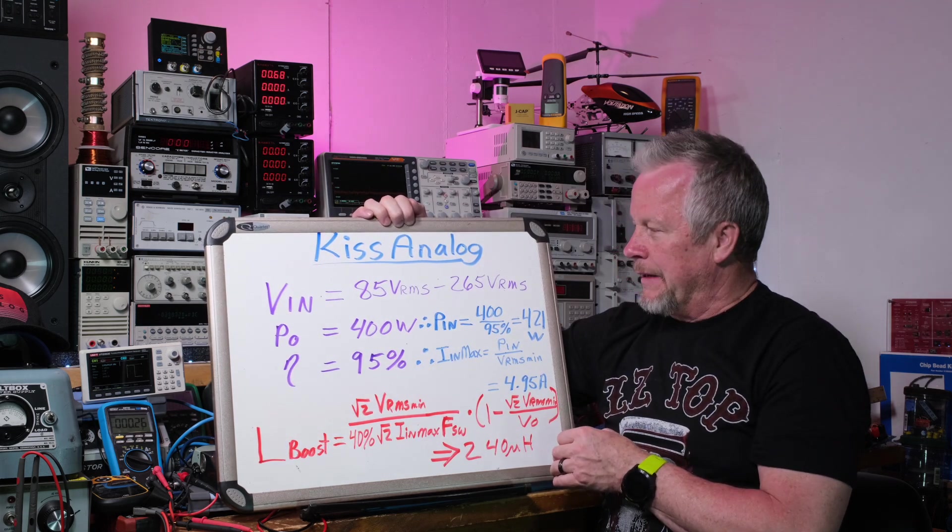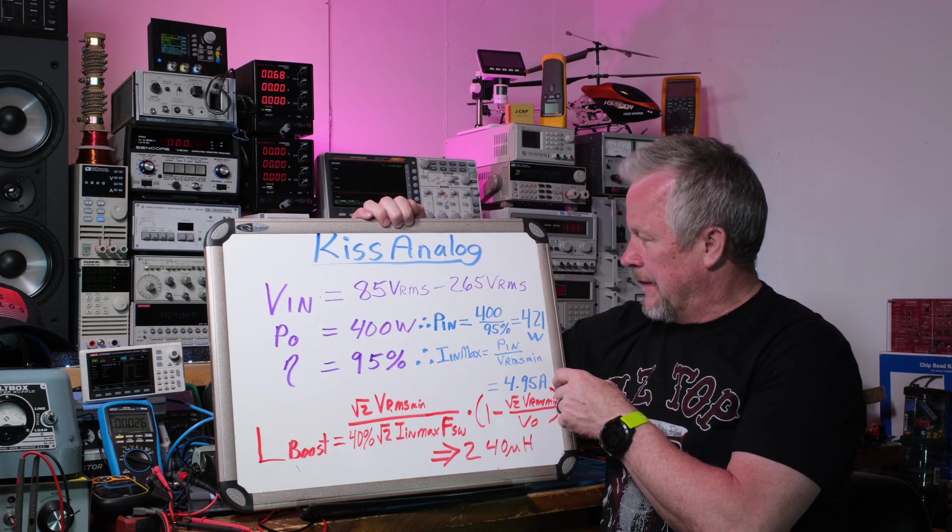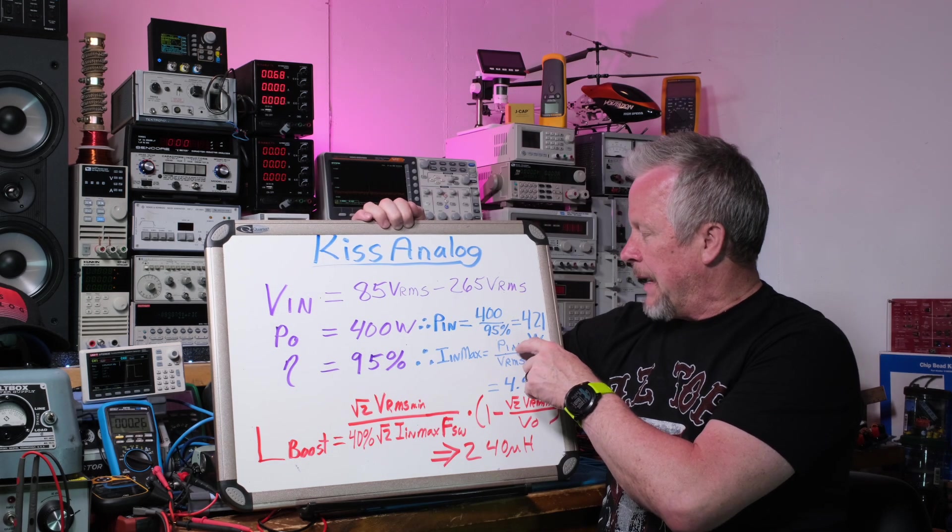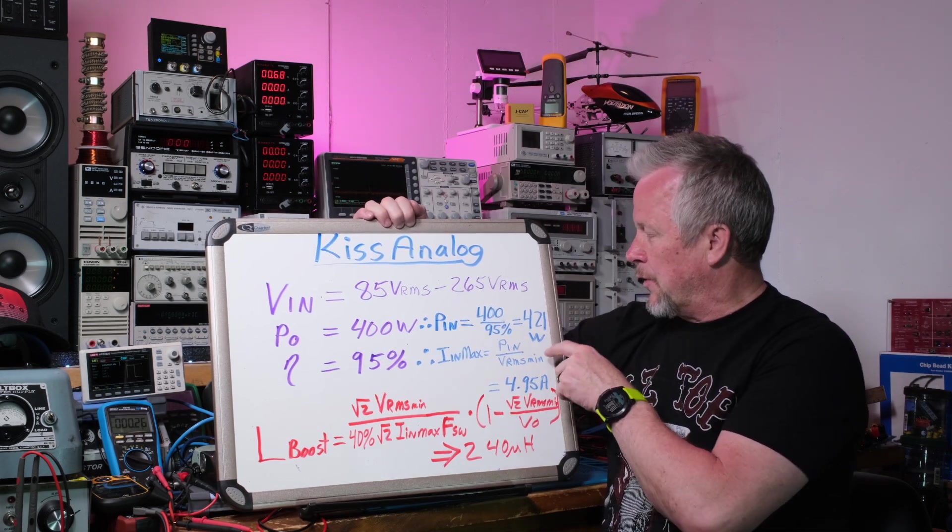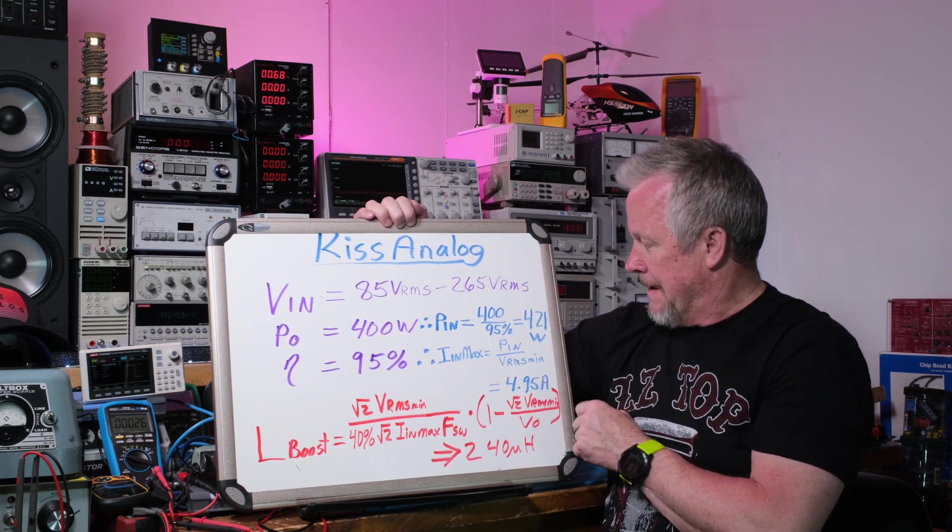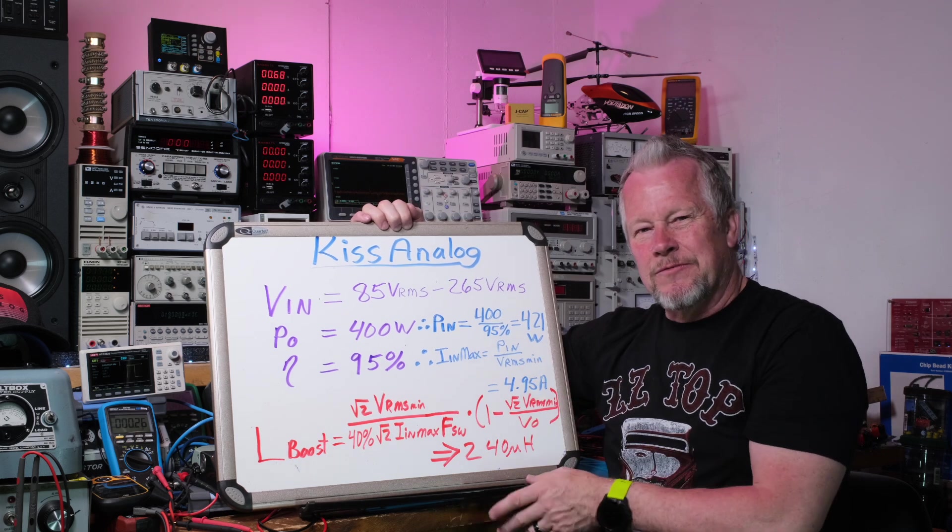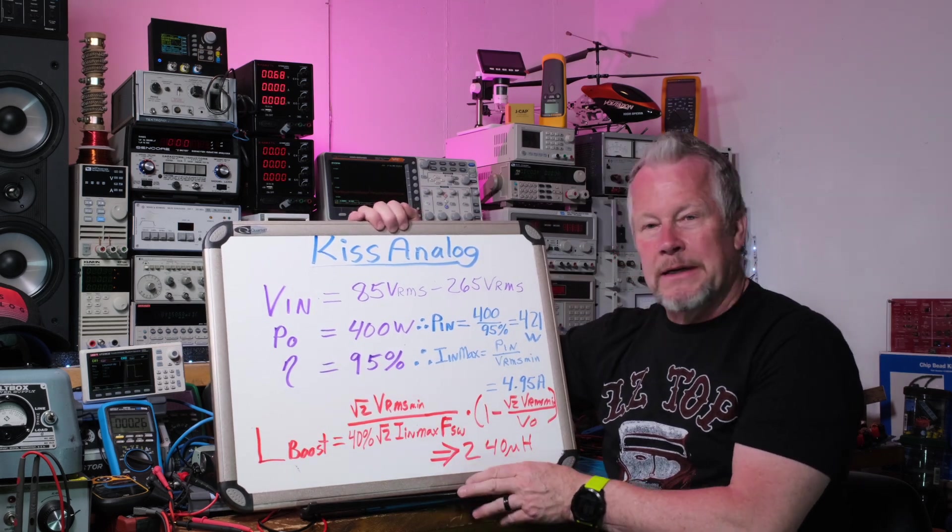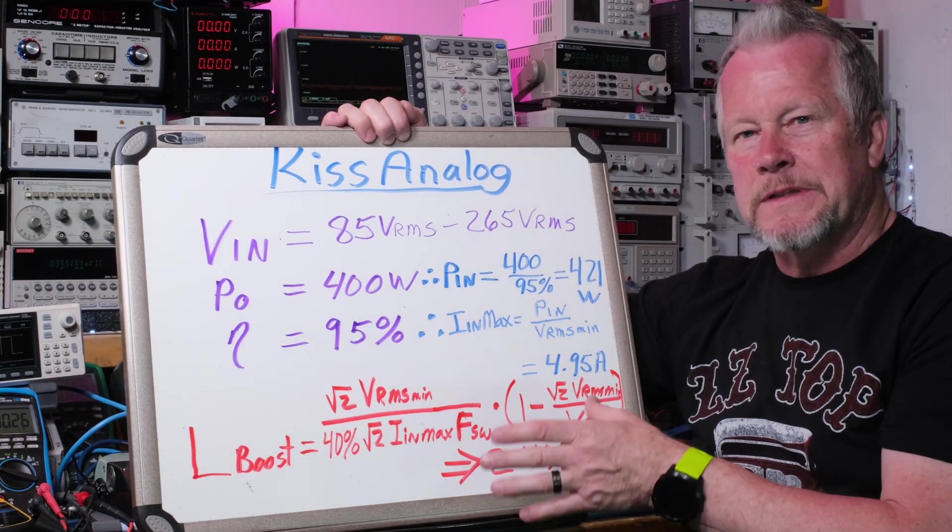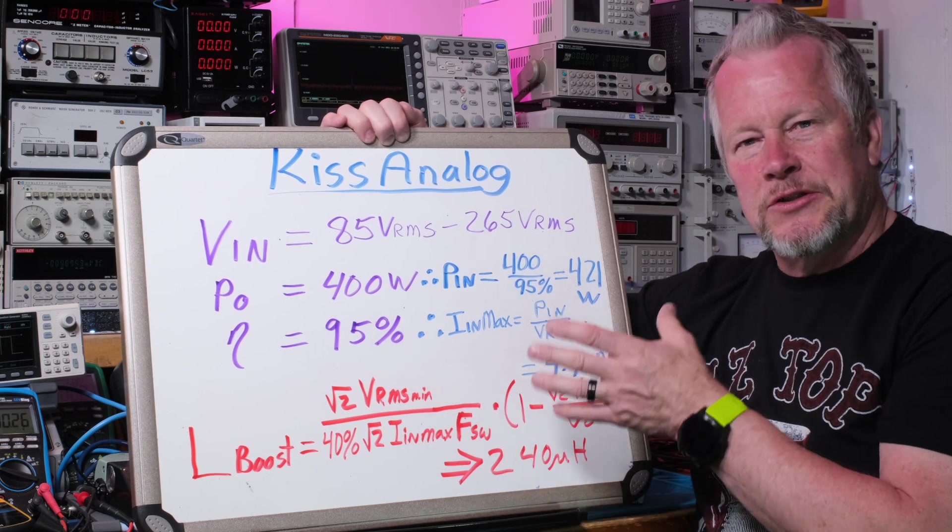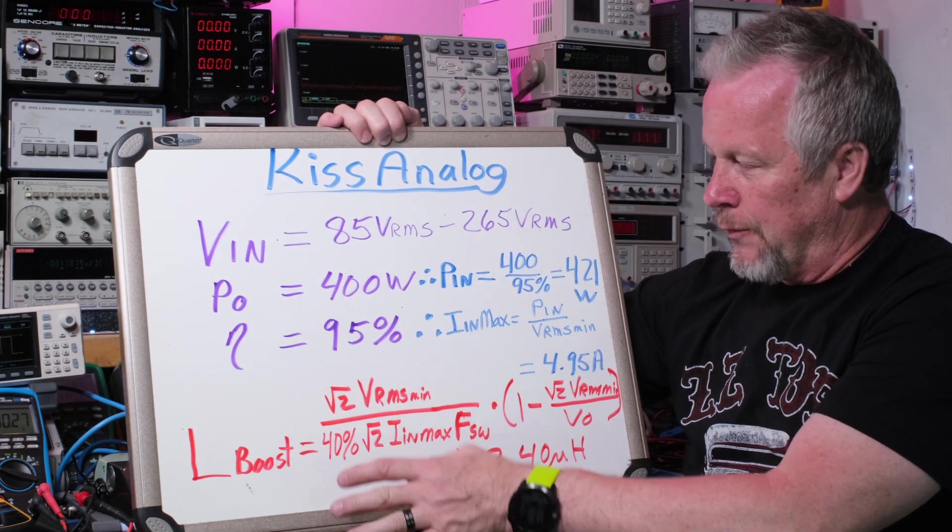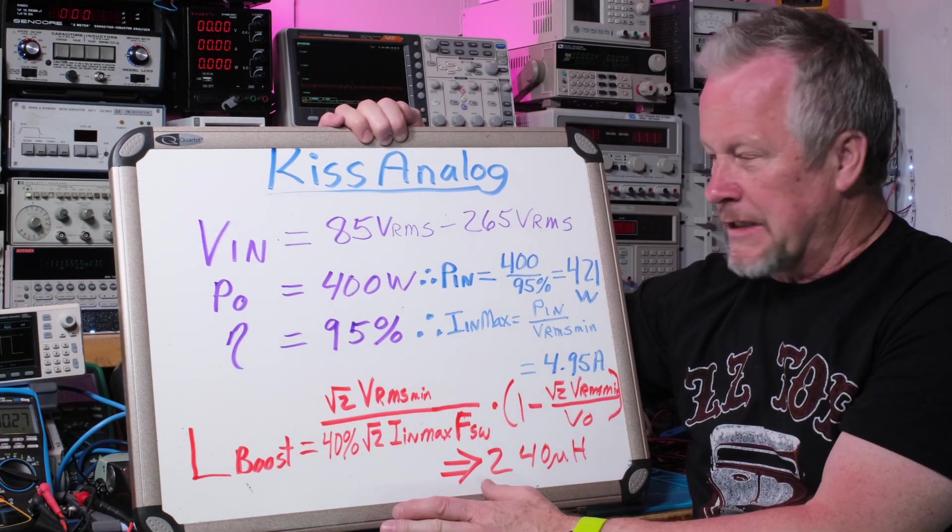Okay, so all right, so here we are. If we calculate the I_IN max, it'll be the power in, which is this 421, divided by the V_RMS min, which is this. And that gives us right about 5 amps RMS at the input. So we calculate the inductor for the worst case and then it should work for all the other cases.